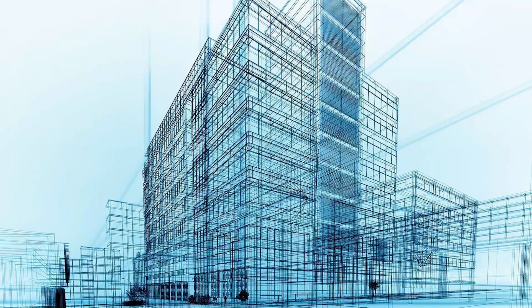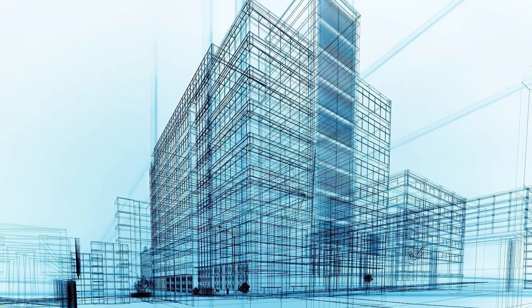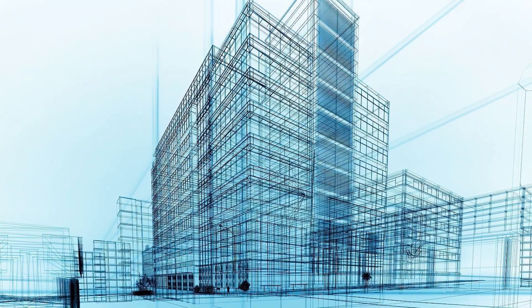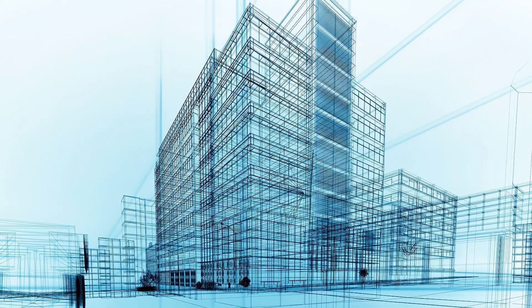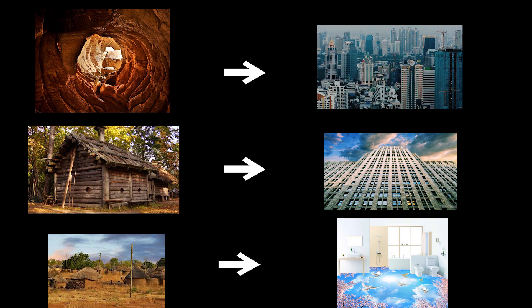Civil engineering is the oldest branch of engineering which is growing right from the stone age civilization. It developed from cave to high-roofed structures, wood to imaginary walls, mud to aesthetic floorings. It is an art of doing modernization in various building components and materials which we utilize in our daily life.